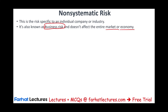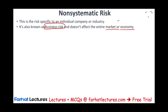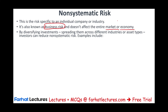Rather than putting all your money in company A, you choose companies A, B, C, D, and E — maybe 20% in each. When you diversify, you put your money in different companies and different industries, spreading the risk. If company A or industry A did not do well, maybe company B and C will do better, and it will average out. Investing across stocks, bonds, real estate, and gold will reduce your non-systematic risk.